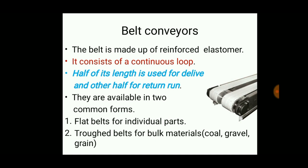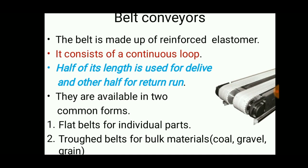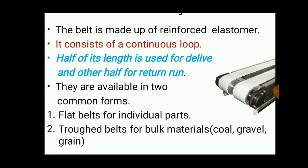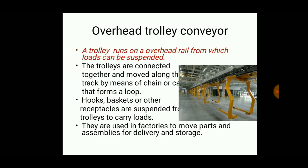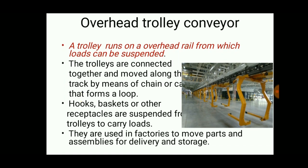Belt conveyors use a belt made of reinforced elastomer consisting of a continuous loop — half the length is used for delivering and the other half for return. There are two types of belts: flat belts for individual parts, and troughed belts for bulk materials such as gravel or grain.